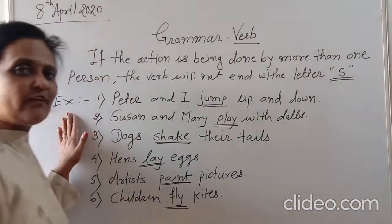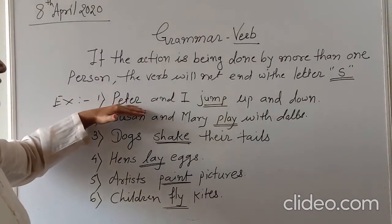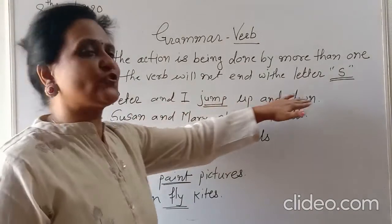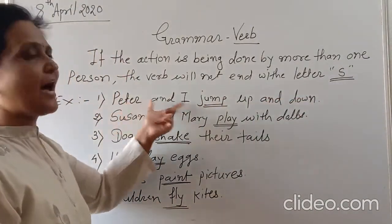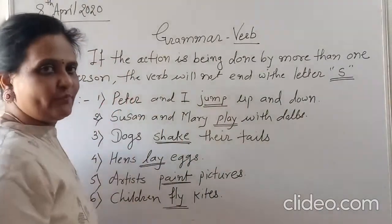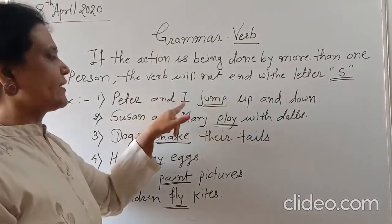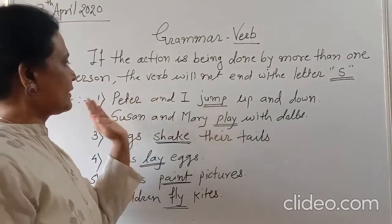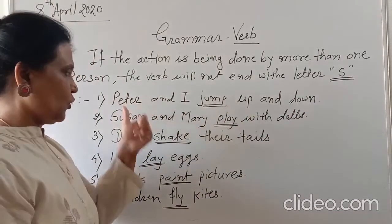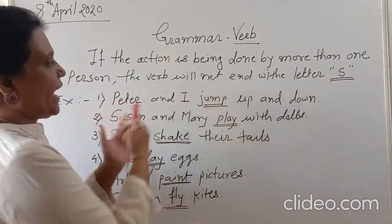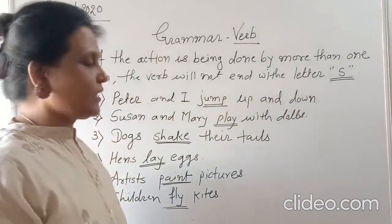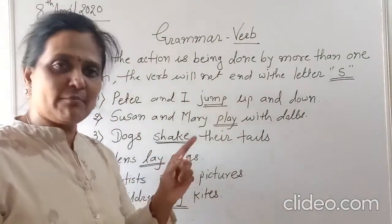Here is the first example: Peter and I jump up and down. So how many persons are in this sentence? Two — one is Peter and another is I. There are two persons in this sentence. So what are Peter and I doing? They are jumping up and down. They both jump up and down.